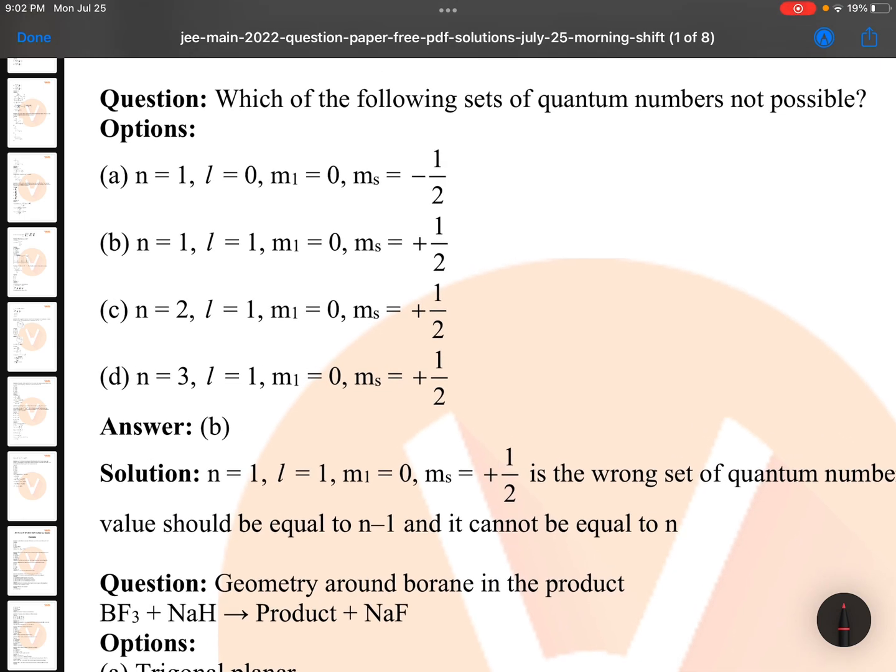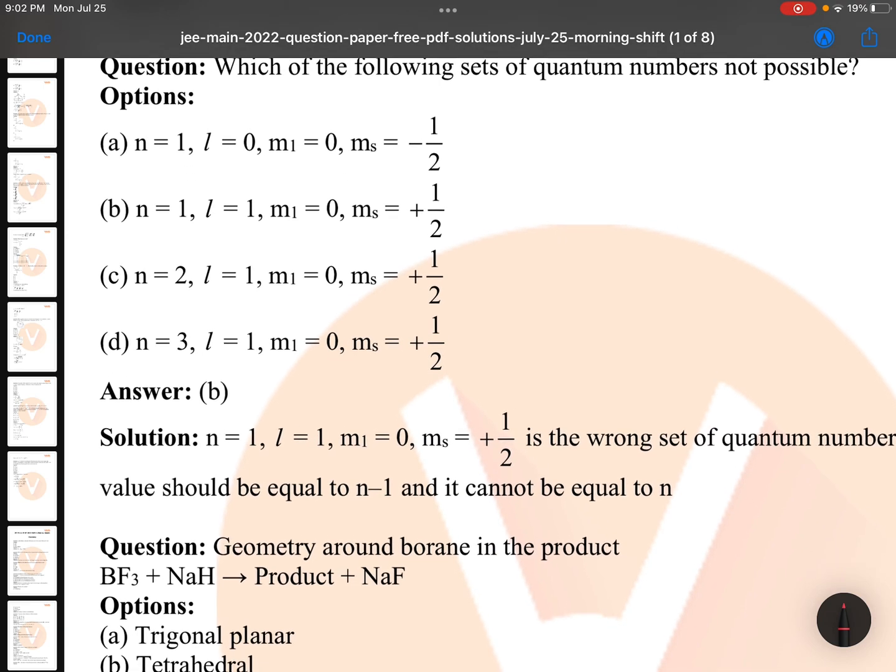Which of the following sets of quantum numbers is not possible? n equals 1, l equals 1 is not possible. When n is 1, l must be 0 only. So second option.